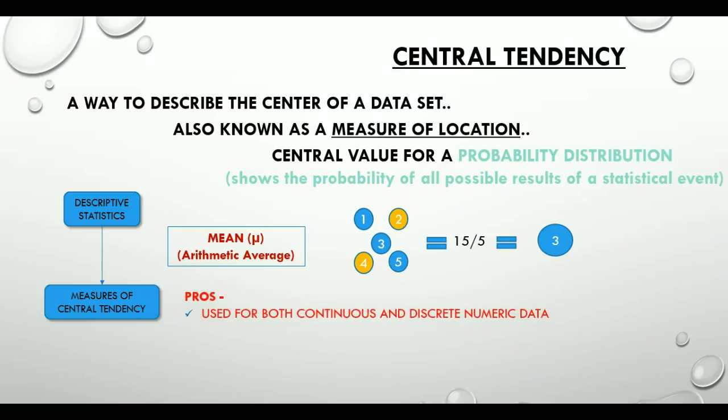Good thing is that we can use it for both continuous and discrete numeric data. Disadvantage is it cannot be used for qualitative data and it is heavily influenced by outliers.